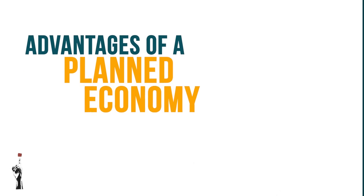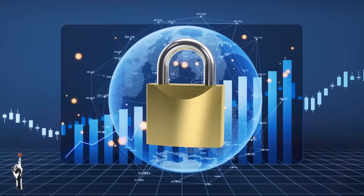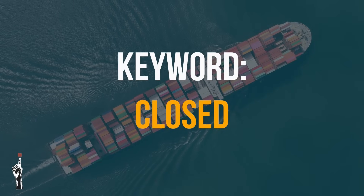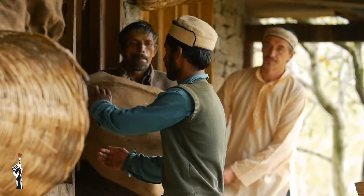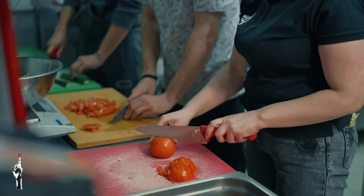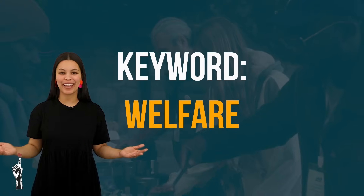Firstly, planned economies are very stable systems because they are considered closed economies with very little interference — the keyword here is 'closed.' The second advantage is that the government can direct economic resources to areas where they are most needed — the keyword is 'direct.' Finally, this economic system ensures that the welfare of citizens is taken care of — the keyword is 'welfare.' So the three keywords for the advantages of a planned economy are: closed, direct, and welfare.